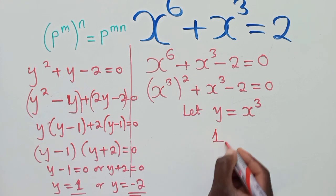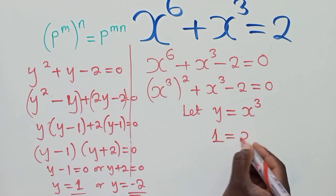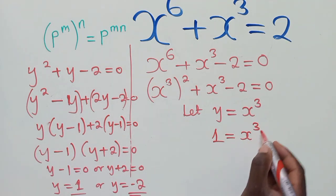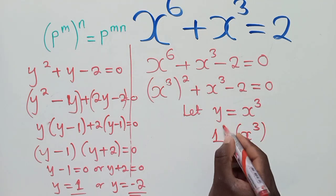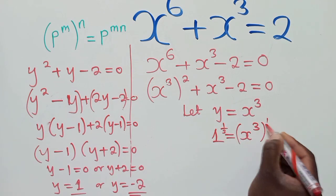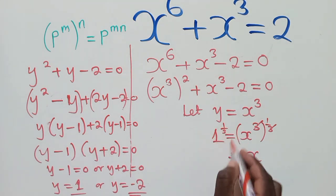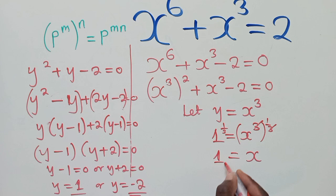So here we substitute 1. Y is equal to 1, we substitute. So we now need to solve this equation where we just apply 1 over 3 to both sides. This and this will cancel, we shall remain with x. So here the cube root of 1 is just 1. So one of the solutions is 1.